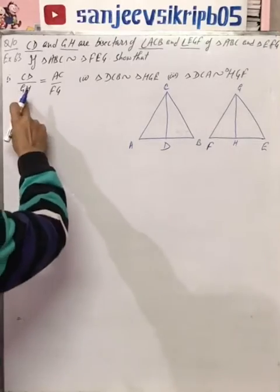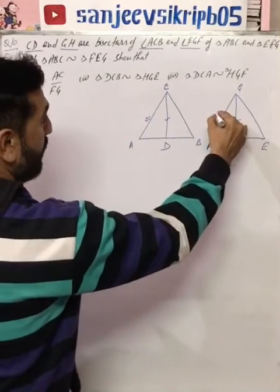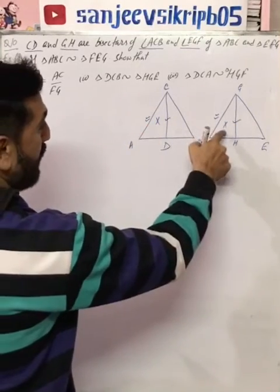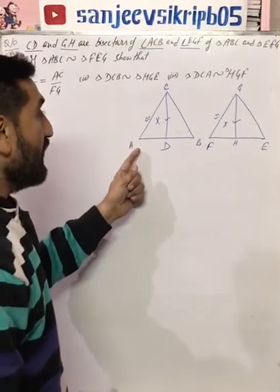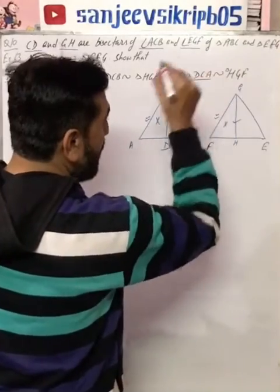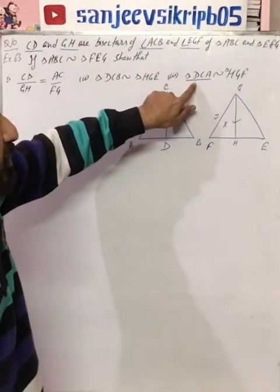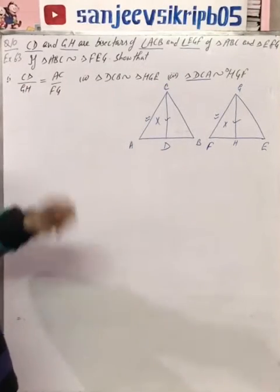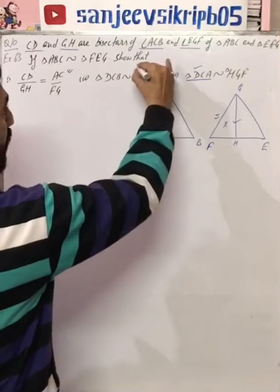We have to prove that CD over GH is equal to AC over FG. We have to prove that these two triangles are similar. If these two triangles become similar, then the sides will be proportional. The triangles are ADC and FHG, or more precisely DCA and HGF. So we will prove this as part one, part two, and part three.